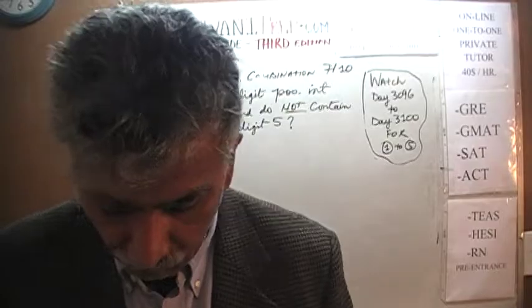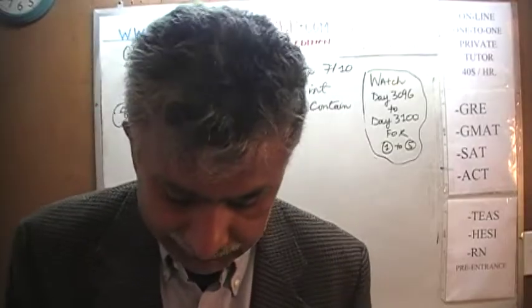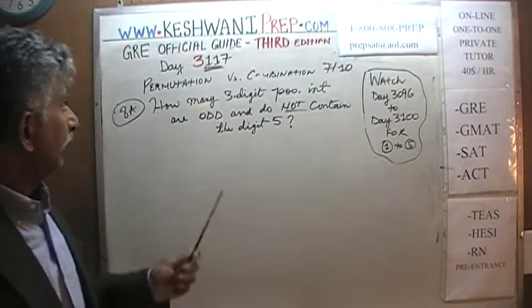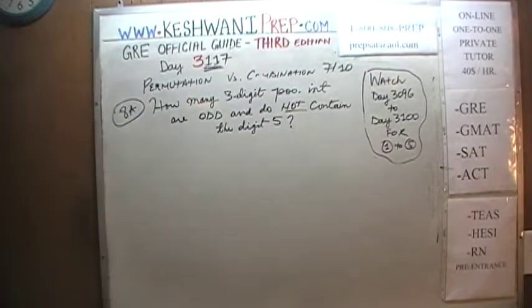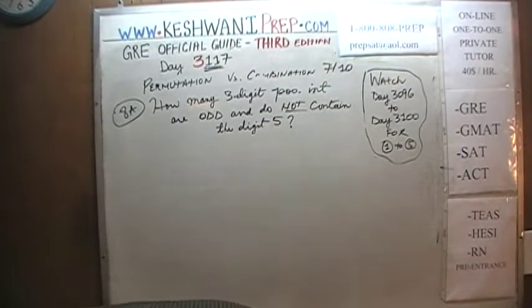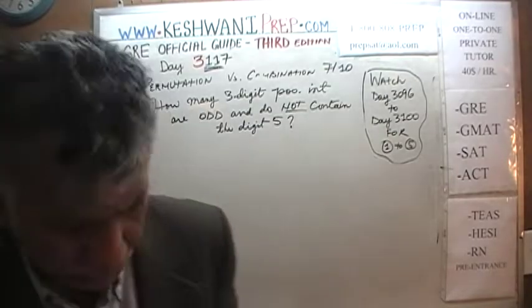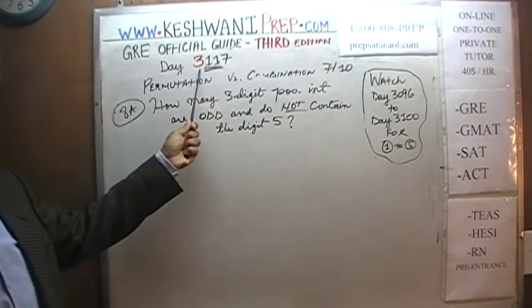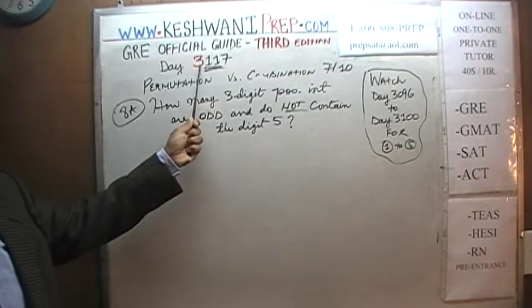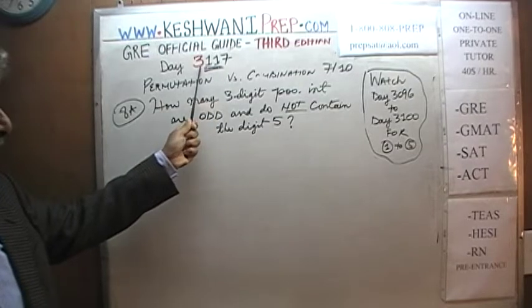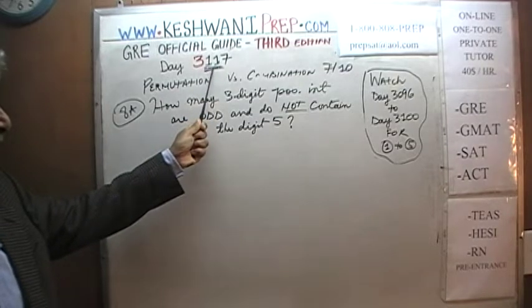Today is our lesson number 117. Day 3117 — the three is to signify the fact that we are in the third edition. Third edition, day 117.